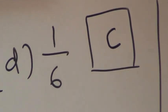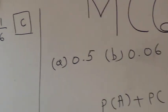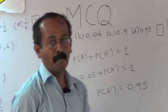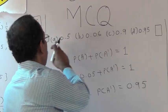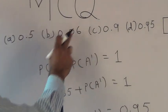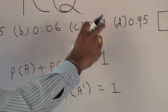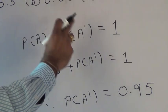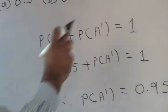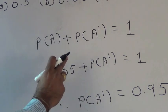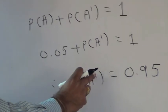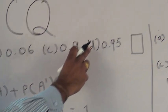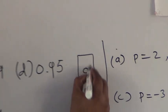Next: if Ā denotes the complement of event A and probability of A is 0.05, then what is the probability of complement of Ā? The alternatives are a) 0.5, b) 0.06, c) 0.9, d) 0.95. The formula is P(A) + P(Ā) = 1. Since P(A) = 0.05, P(Ā) = 0.95. Alternative d represents 0.95, so d is the correct alternative.